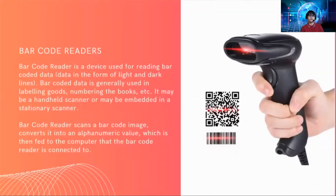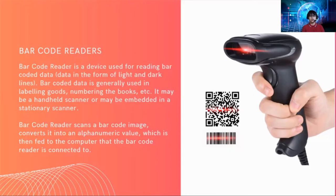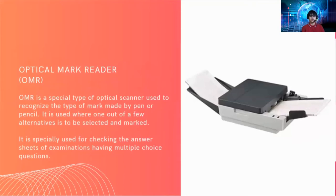We also have barcode readers. As you may have observed when you go out and do some groceries, products have barcodes and the cashier scans them. The barcode reader is a device used for reading barcoded data. Barcoded data is generally used in labeling goods, numbering books, etc. It may be a handheld scanner or embedded in a stationary scanner. The barcode reader scans a barcode image and converts it into an alphanumeric value which is then fed to the computer.